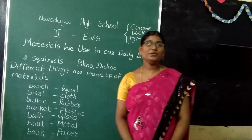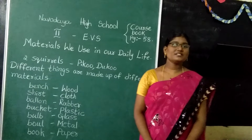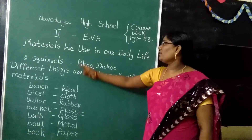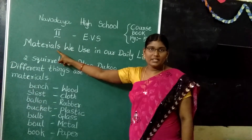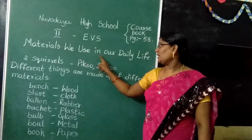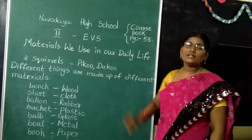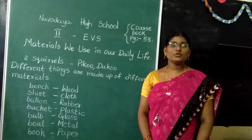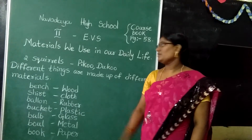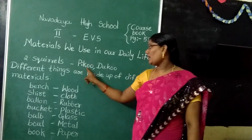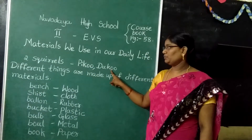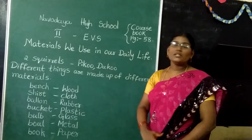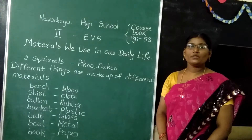Hi children, how are you? This is your EBS class. Today our lesson is materials we use in our daily life. In this lesson there is a small story. In that lesson two squirrels are there. One squirrel's name is Tikku and the second squirrel's name is Dukku. We will discuss the story afterwards.